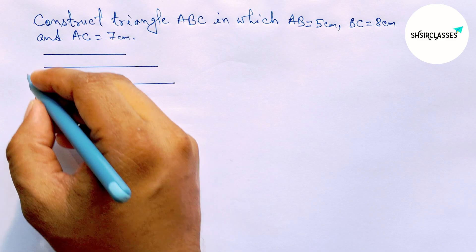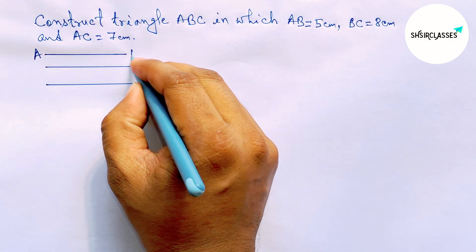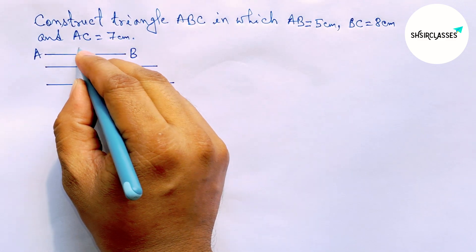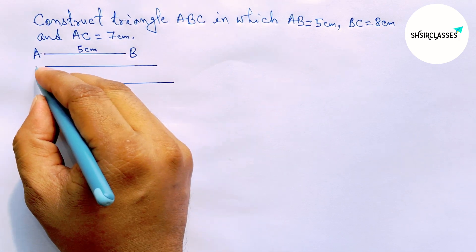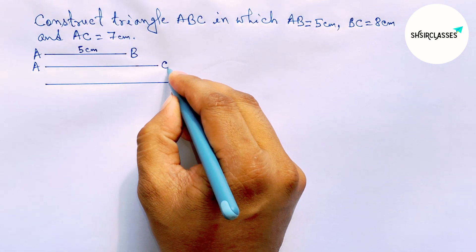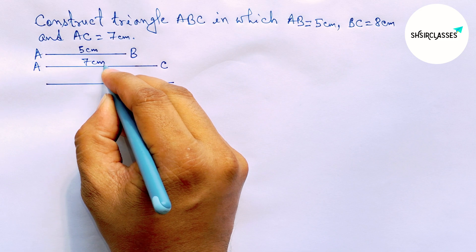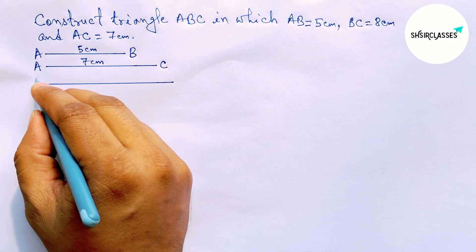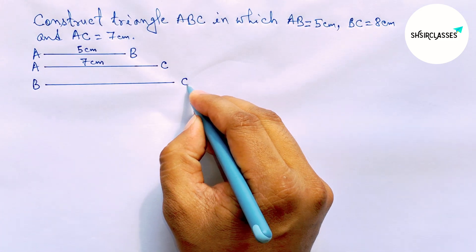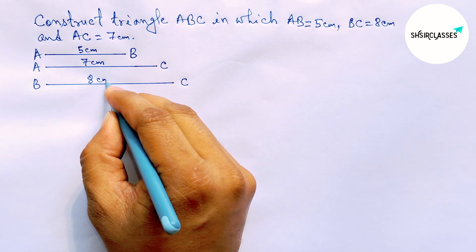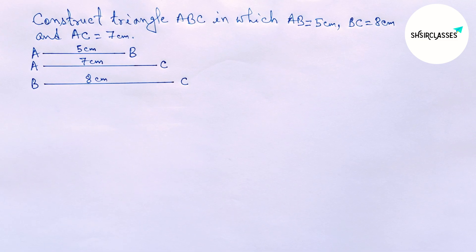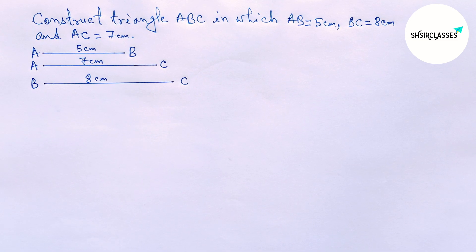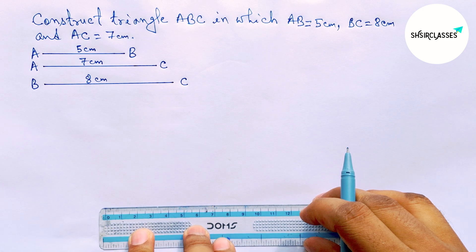Now labeling here: AB equals 5 centimeters, this one AC equals 7 centimeters, and last BC equals 8 centimeters. Perfect. Now again drawing a line segment of length 8 centimeters.